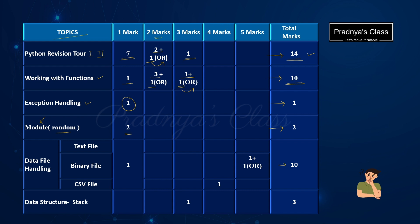You can see the weightage is 10 marks. In Data File Handling, you will be getting questions on text file, binary file as well as CSV files. There will be one question for one mark which can be based on file modes or the functions and methods associated with these three files. In the sample paper, there is a question for four marks based on the CSV file. And if we look at the category of five-marks question, there is one question with OR option. Focus on these topics and ensure that you have a strong understanding of the concepts within them.